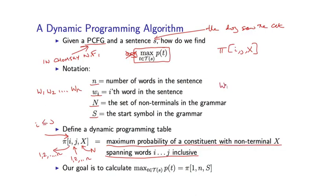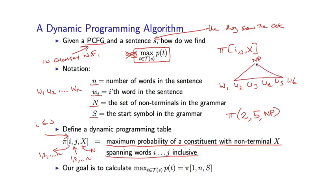Say I have some sentence w1, w2, w3, w4, w5, w6, and I look at pi(2, 5, NP). What does that correspond to? There are going to be many different ways, potentially, that an NP can have a parse tree underneath it which spans words 2 through 5 inclusive. Every one of those parse trees will have a probability, which is simply the product of the rule probabilities within that parse tree. And pi(2, 5, NP) is going to be the highest probability for any parse tree with NP spanning those words 2 through 5.